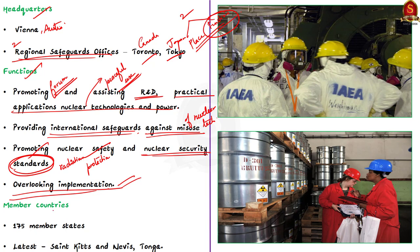The IAEA has 175 member countries as of today. The latest two countries to join IAEA are St. Kitts and Nevis and Tonga. India became a member of the IAEA in the year 1957 itself — when IAEA was first established.